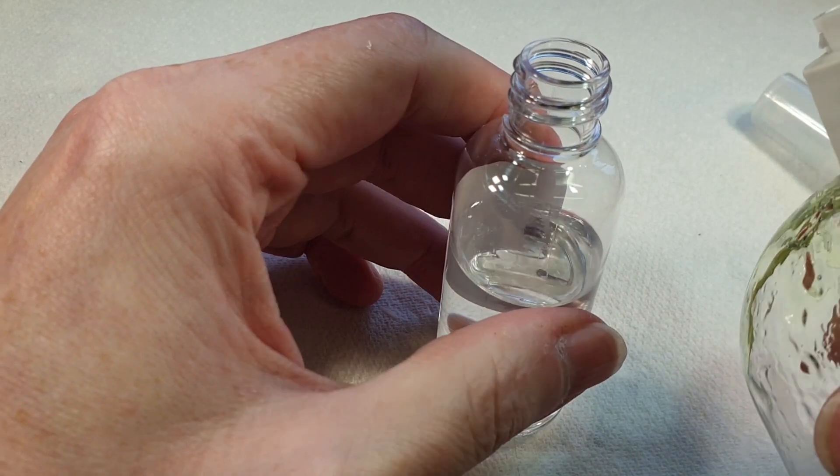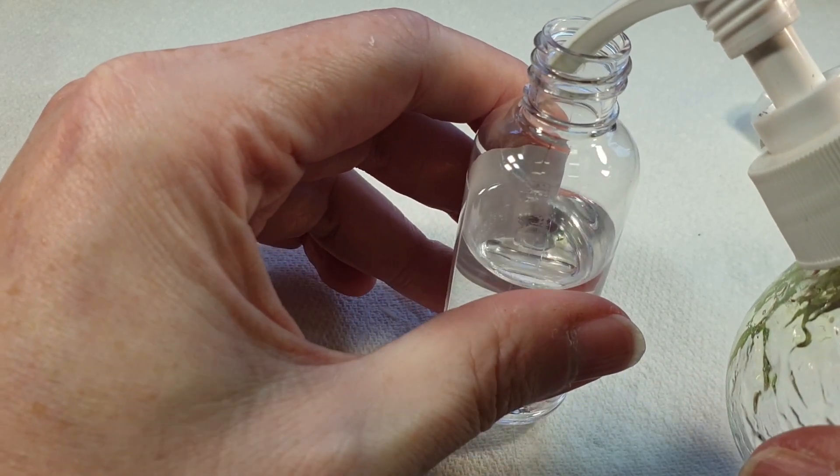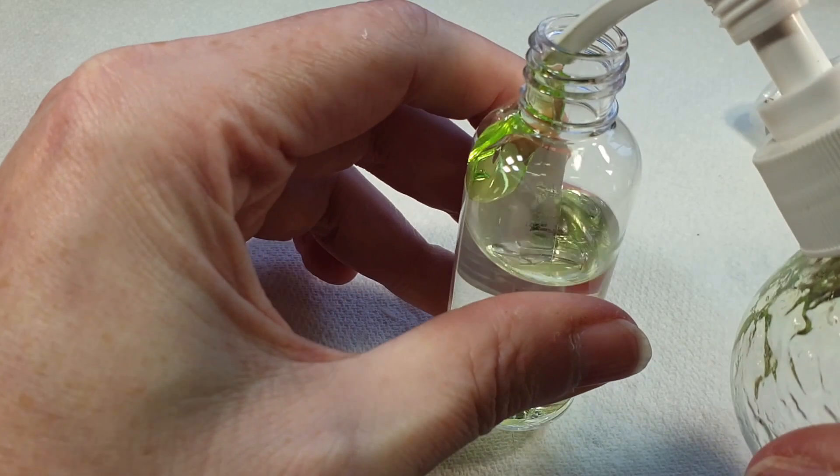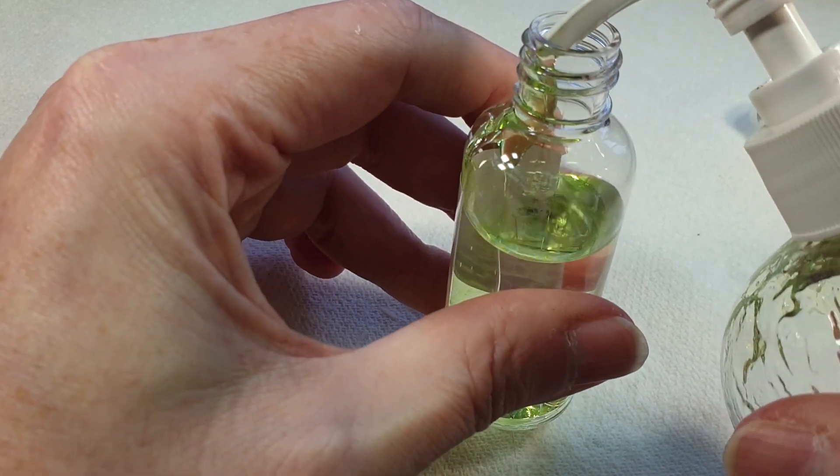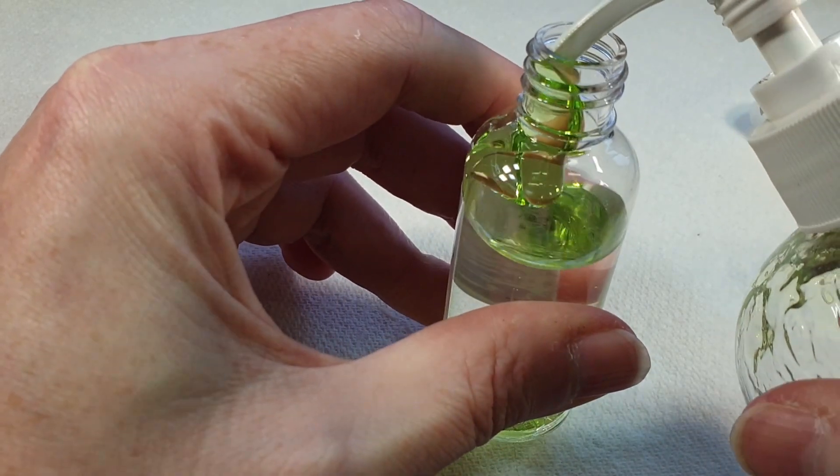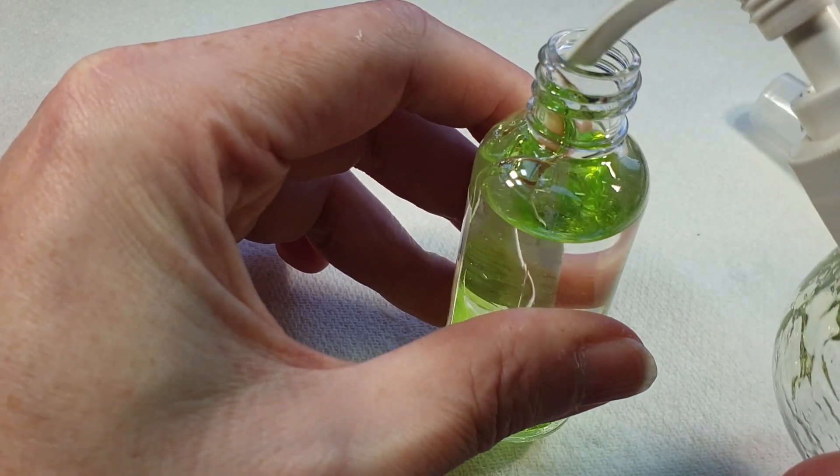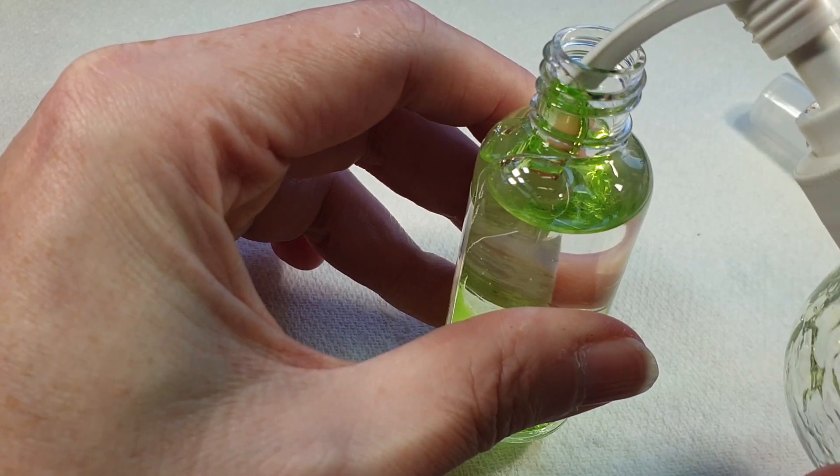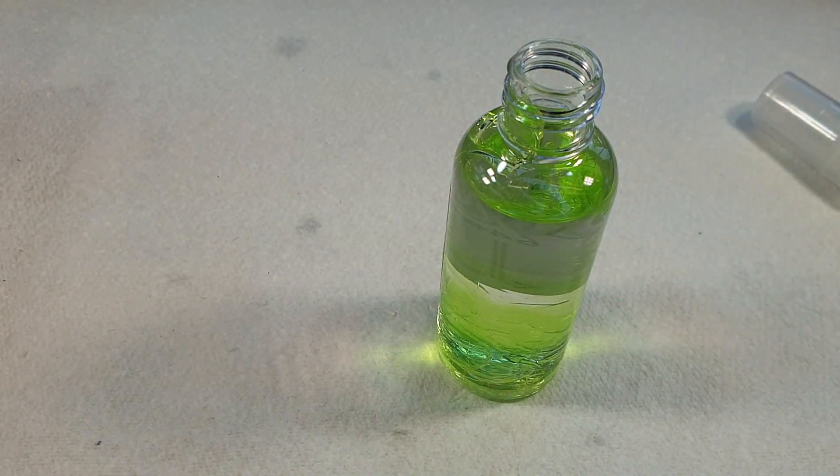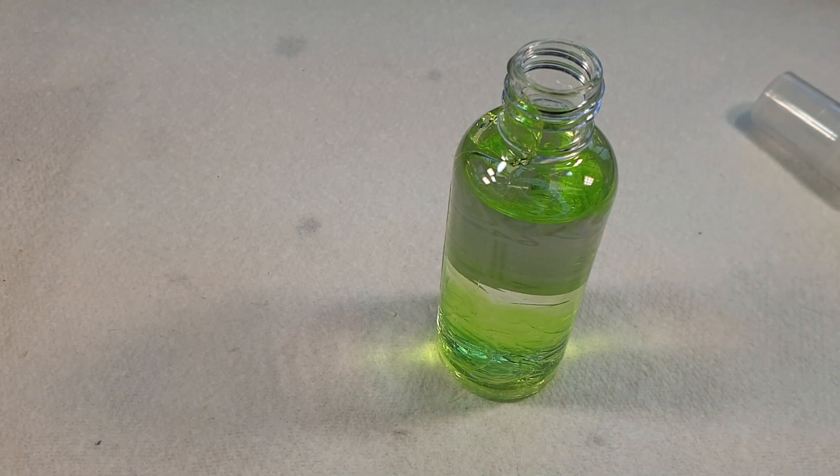And then I'm going to put some aloe vera in out of our pump bottle simply because it's easier. Just squirt that in like that. Don't fill the bottle right to the brim, leave a little bit of head space because you want to shake it and mix it up. That'll probably do for that. You'll see that's all sunk to the bottom but that's fine, don't worry about that, we'll deal with that in a minute.